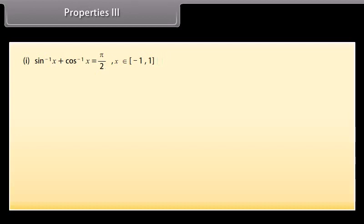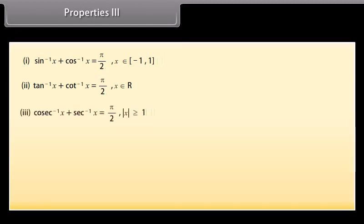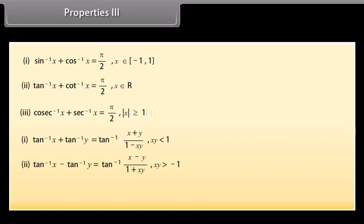Properties 3: sin⁻¹x + cos⁻¹x = π/2, for x ∈ [−1, 1]. tan⁻¹x + cot⁻¹x = π/2, for x ∈ ℝ. cosec⁻¹x + sec⁻¹x = π/2, for |x| ≥ 1. tan⁻¹x + tan⁻¹y = tan⁻¹((x + y)/(1 − xy)), for xy < 1. tan⁻¹x − tan⁻¹y = tan⁻¹((x − y)/(1 + xy)), for xy > −1.